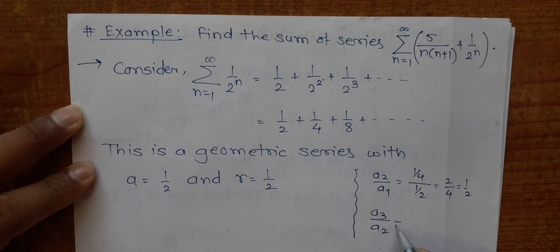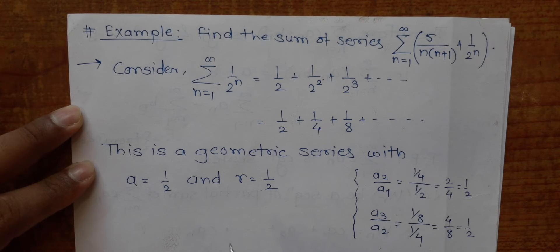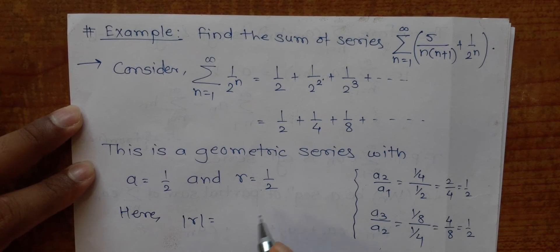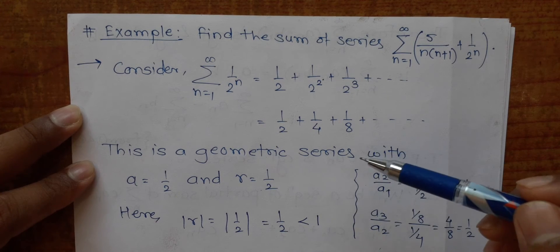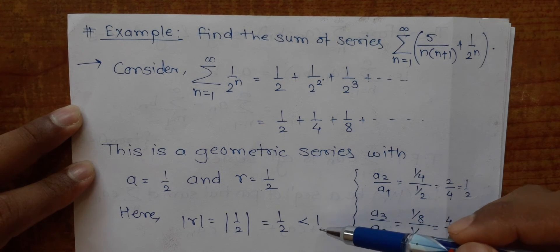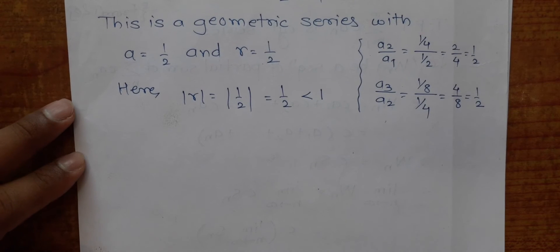a₃ is 1/8 and a₂ is 1/4, so (1/8)/(1/4) = 4/8 = 1/2. This confirms that the common ratio is 1/2. Now, |r| = |1/2| = 1/2 < 1. We know a geometric series is convergent only when |r| < 1, so this series is convergent.